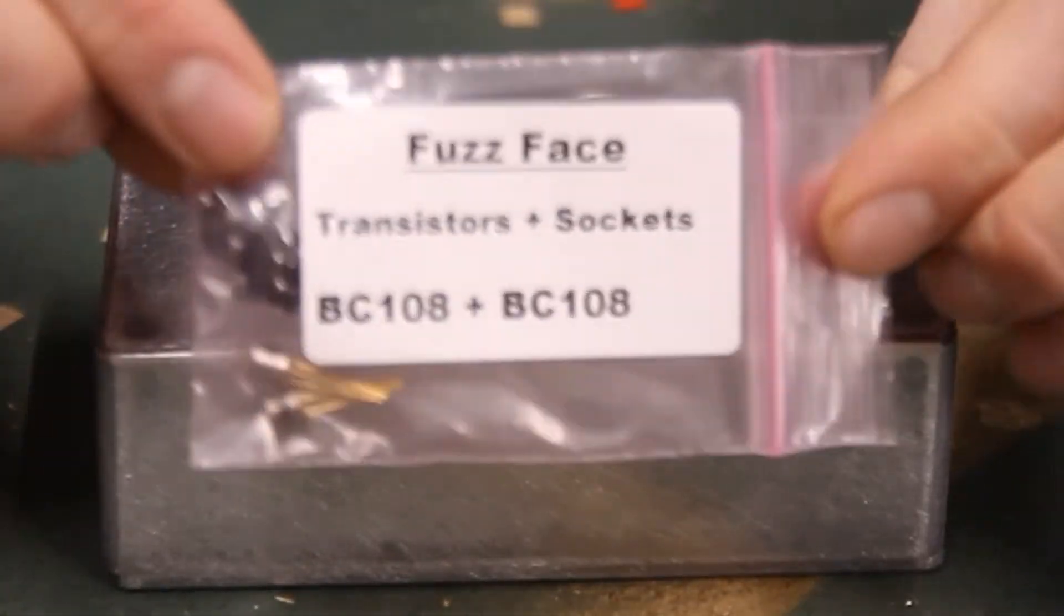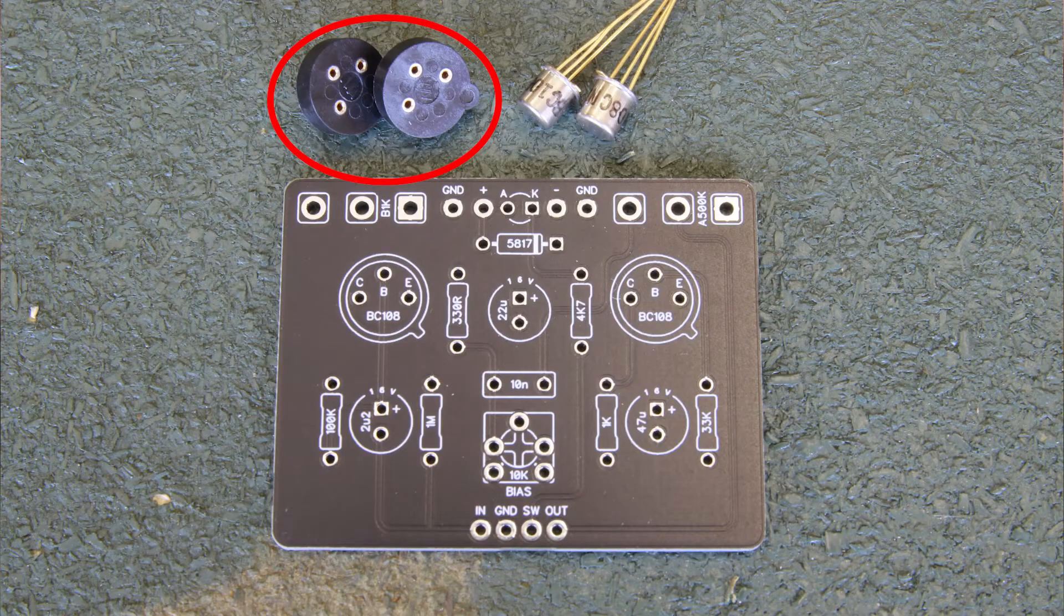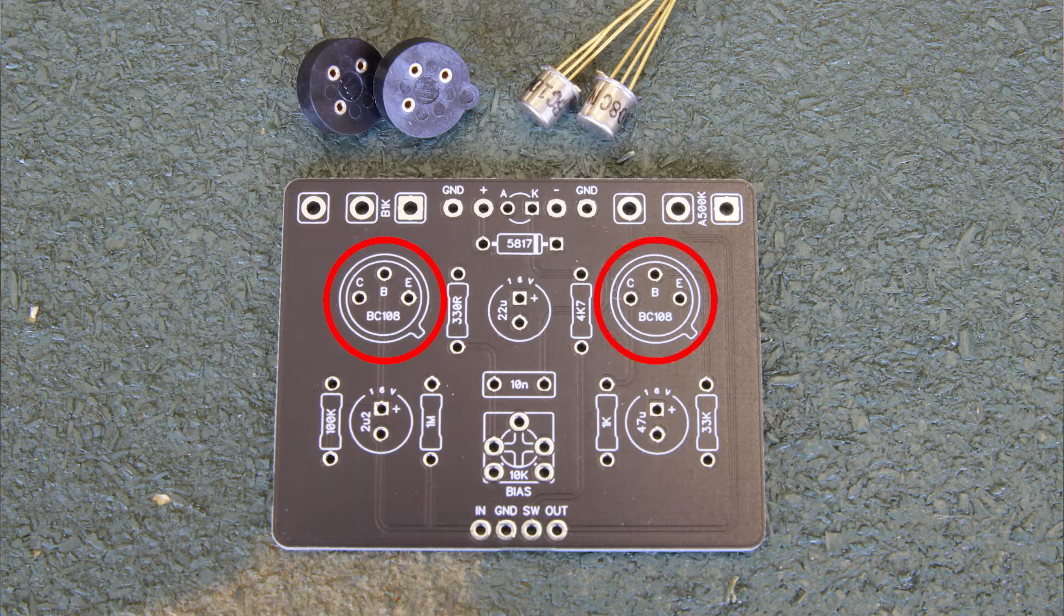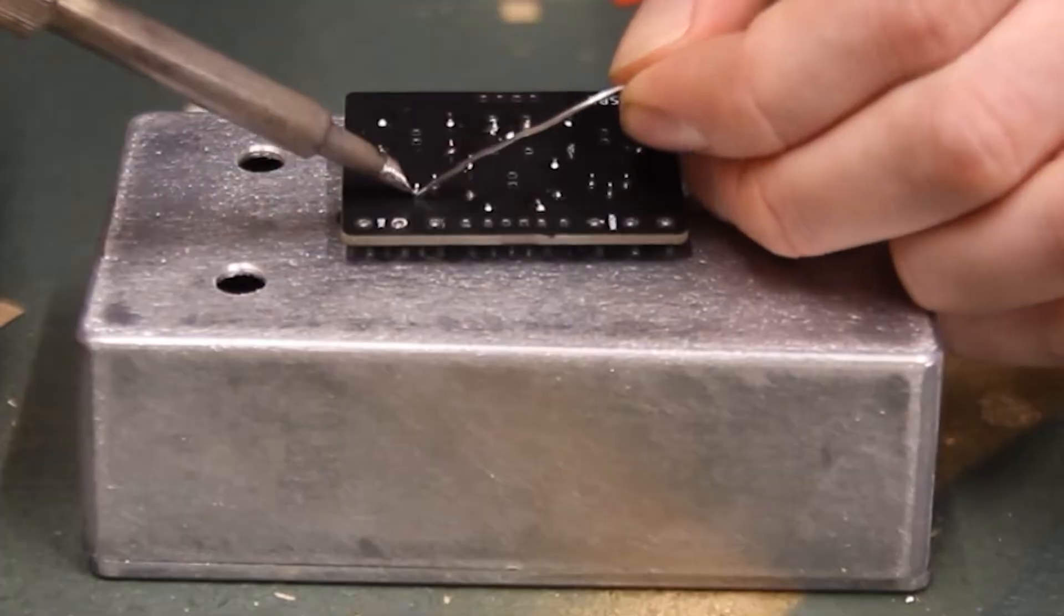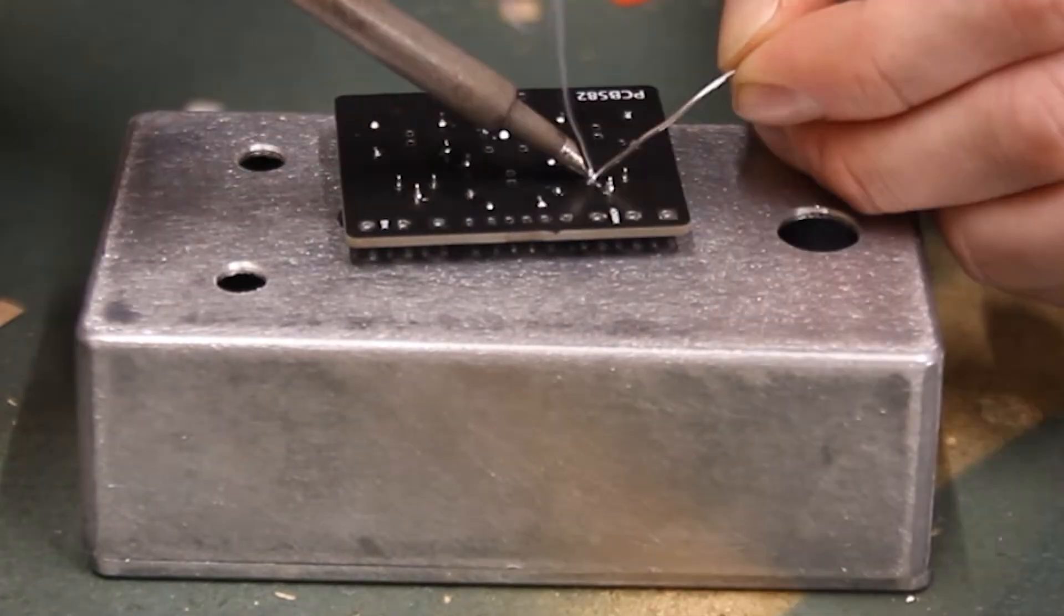Find the bag of transistors and sockets. We're just going to solder in the sockets for now. They will go here and here. Sockets allow you to swap out transistors without soldering if you choose to experiment later. Solder them in.